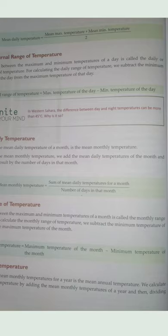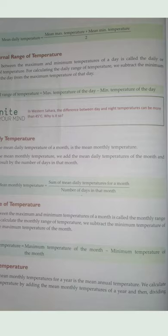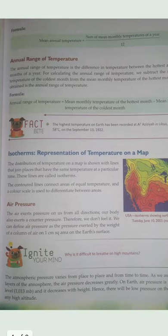Next is isotherm. Isotherms are the imaginary lines on a map that join places having the same temperature at a particular time. These are contoured lines shown in a wavering form on a temperature map, displayed in different colours according to the intensity of heat. The contoured lines connect areas of equal temperature and a colour scale is used to differentiate between areas.